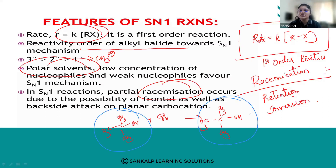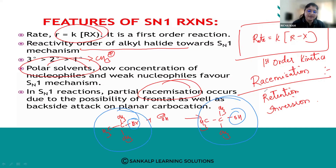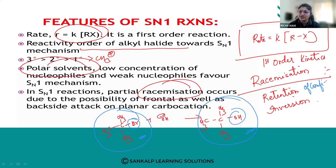When comparing the reactant (CH₃)₃C–Br and the product (CH₃)₃C–OH, the only change is that the leaving group is replaced by the nucleophile. If the relative arrangement of bonds in the reactant and product remains the same after the reaction, it is called retention of configuration.